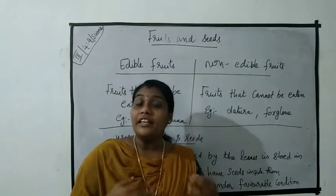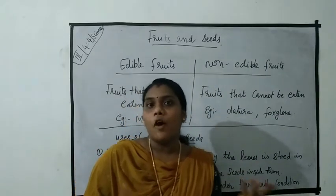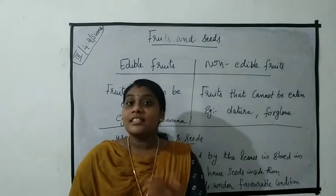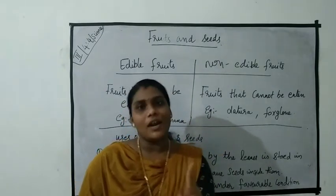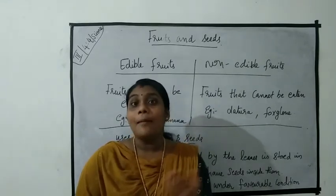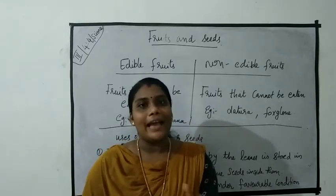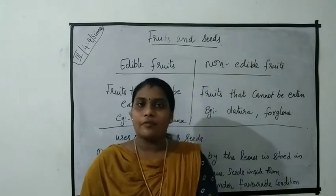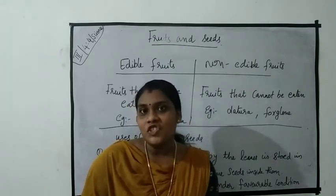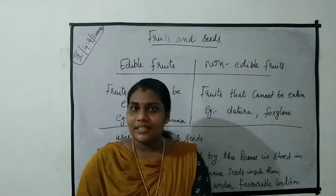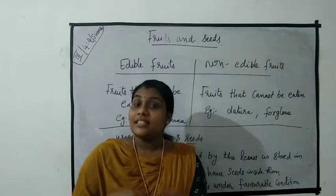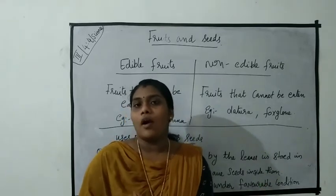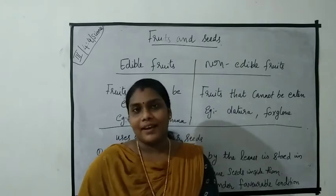There are different types of fruits based on the number of seeds. Some fruits have only one seed — for example, mango and cherry. Some fruits have few seeds — for example, orange and apple. And some fruits have many seeds — for example, watermelon and papaya.